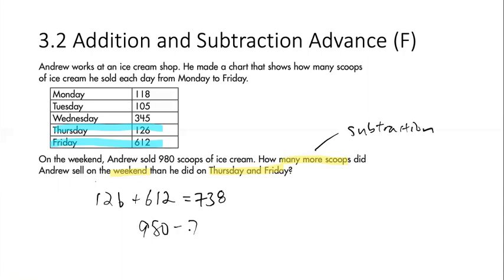So 980 minus 738. You can either do this, or you can stack it up if you need to borrow. That is better for you. It doesn't really matter.